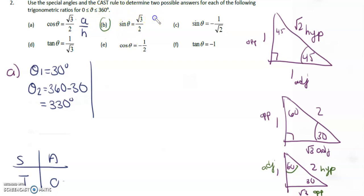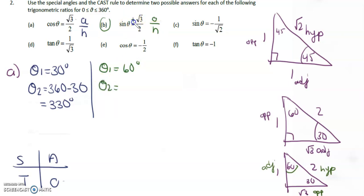For B — sine is opposite over hypotenuse. We're asking when is root 3 the opposite. Root 3 is opposite 60 degrees, so θ₁ is 60 degrees. Sine is also positive in the second quadrant, so θ₂ is 180 minus 60, which is 120 degrees.